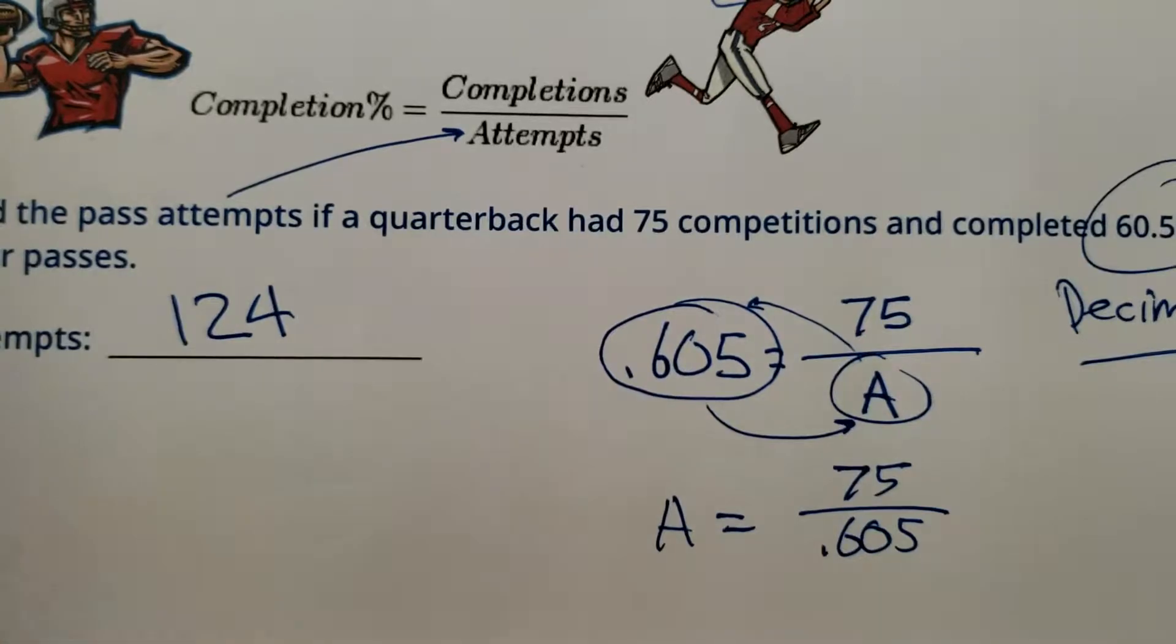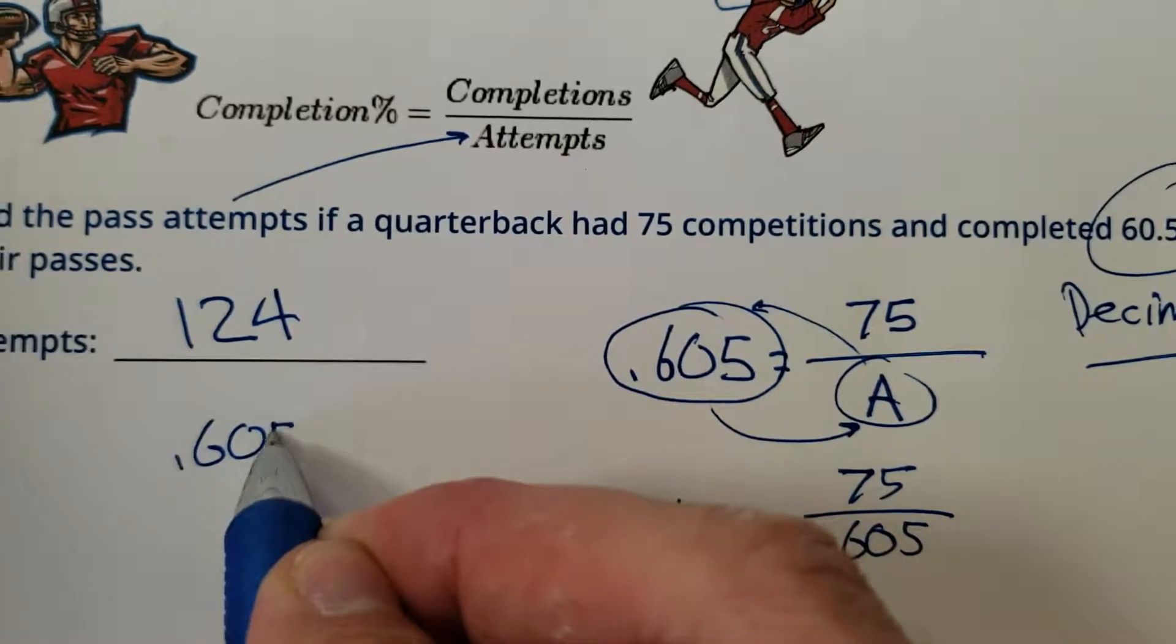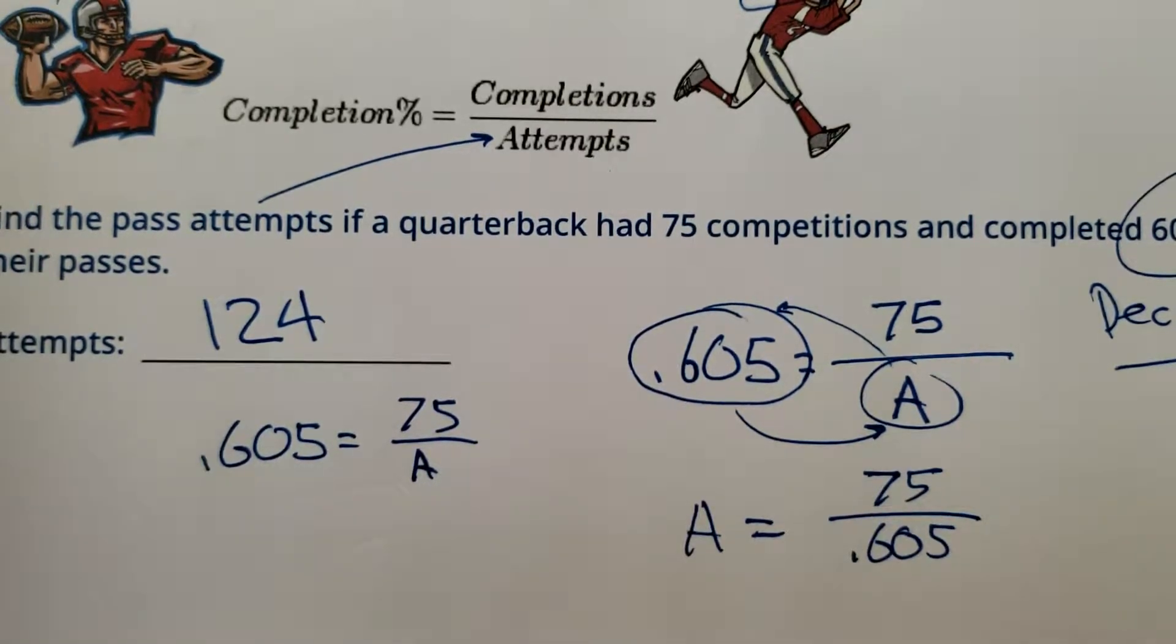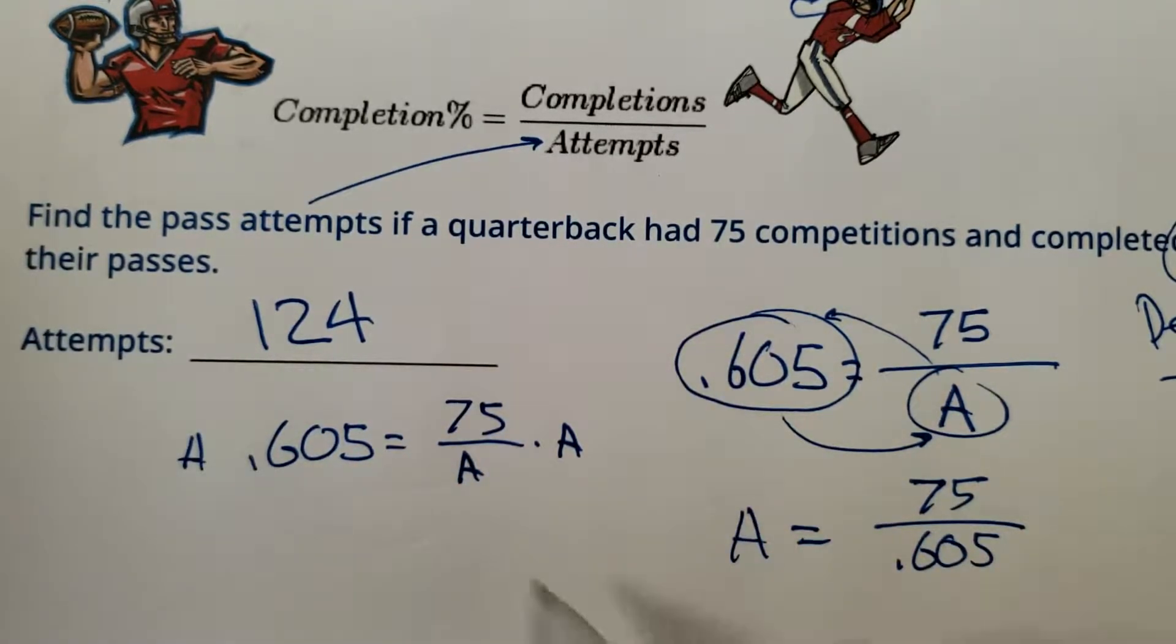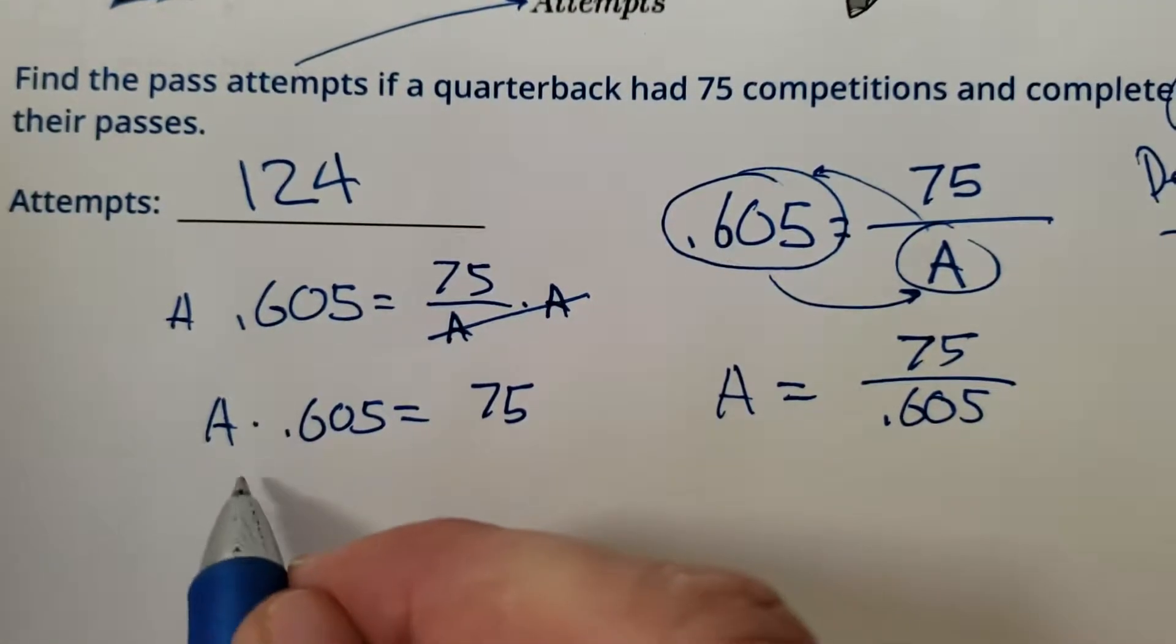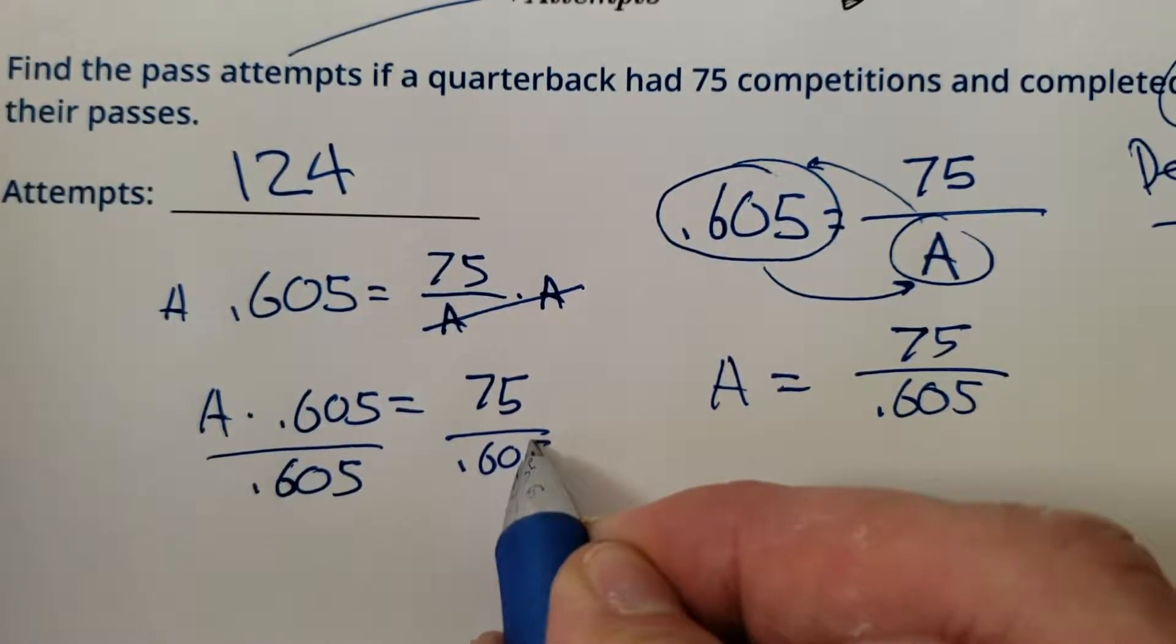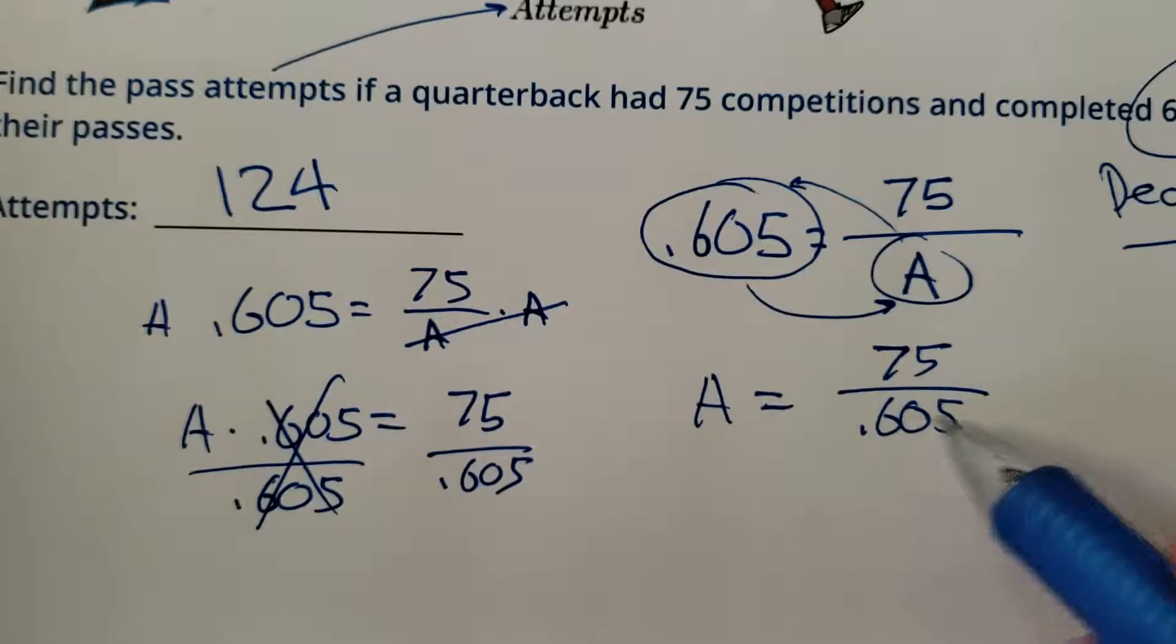That's the shortcut. I'm trying to think if I want to show you the correct way to do it. This is what most math teachers would show you, because it's the right way to do it. Most math teachers would like to take both sides times A. So the A's would cancel. So then you'd have A times 0.605 equaling 75. And then watch this, divide by 0.605. Oh weird.